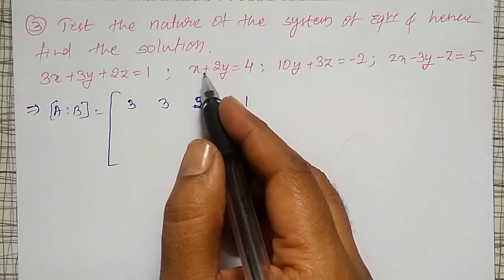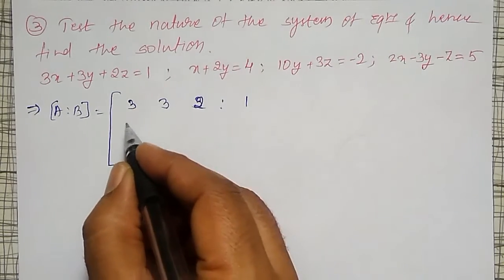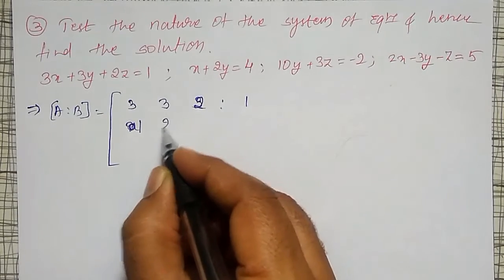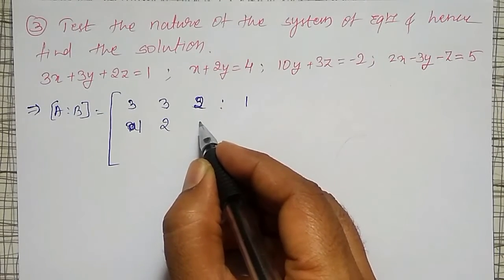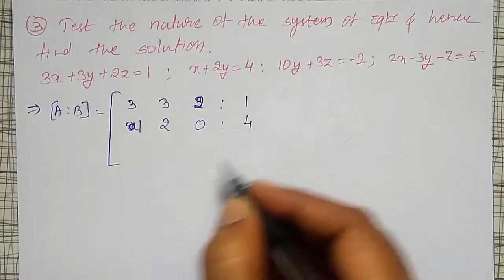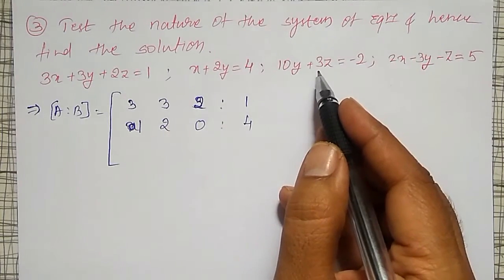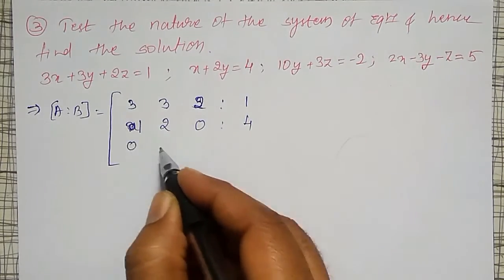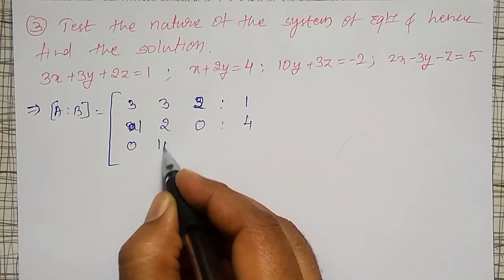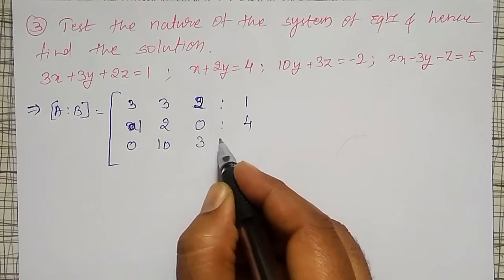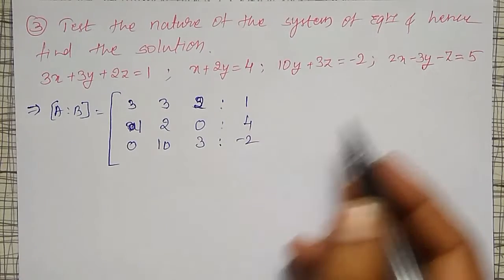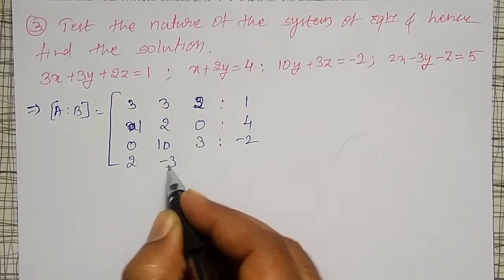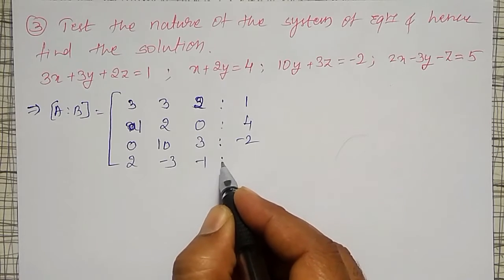From the second equation, X and Y variables are there. Coefficient of X is 1 and Y is 2. Z is not there, so I will take it as 0. And the RHS is 4. From the third equation, X coefficient is not there so I take it as 0, Y coefficient is 10, Z is 3, and RHS is minus 2. Similarly, the fourth equation is 2, minus 3, minus 1, and 5.